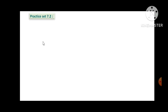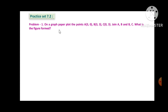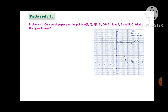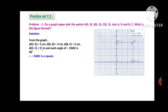Now we will discuss practice set 7.2. Problem 1: On the graph paper, plot points A(3,0), B(3,3), C(0,3). Join AB and BC. After plotting and joining these points, we get a quadrilateral. The sides OA, AB, BC, and OC are each 3 cm, and each angle of quadrilateral OABC is 90°. Therefore, the given figure is a square.